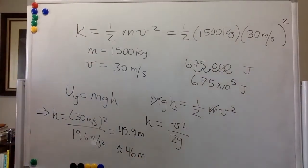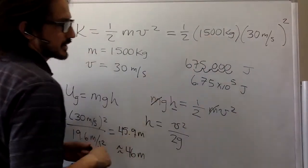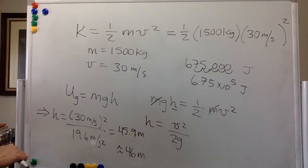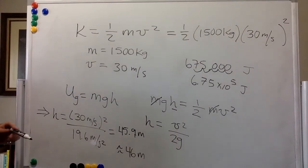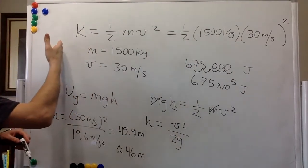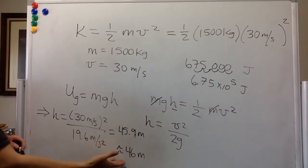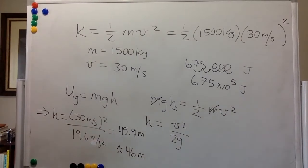So a car of 1,500, I guess it doesn't matter, the mass doesn't matter. But a car traveling at 30 meters per second has the same kinetic energy as potential energy produced by a height of 46 meters.